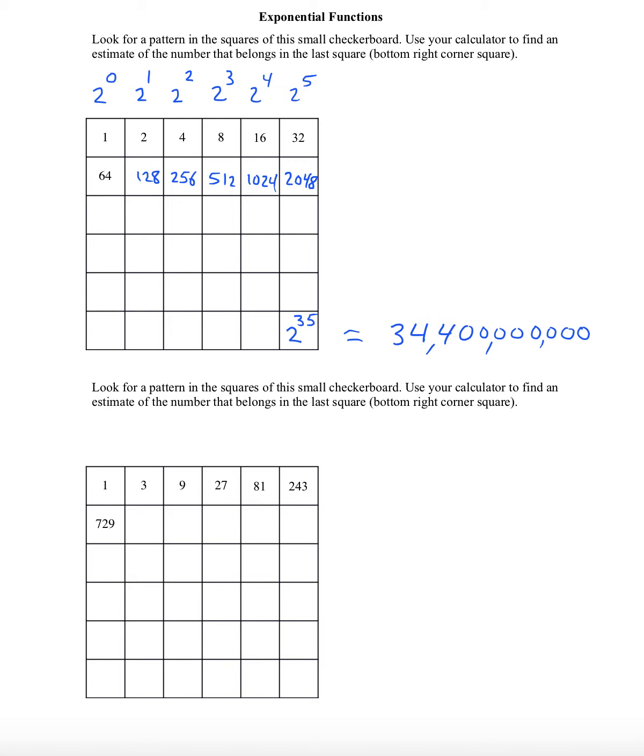The reason why a base of 2 had been used here is because we were doubling the amount on every square. We were multiplying by 2 over and over and over again. Check out the numbers on the next checkerboard. Can you determine what the base is here? What number is each square being multiplied by to get the next square? And that can be the base of the exponential function.